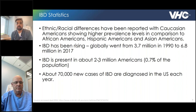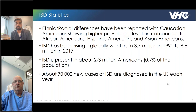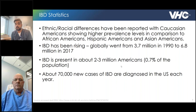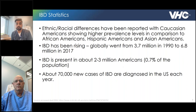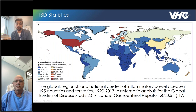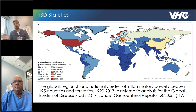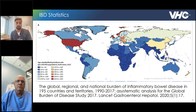IBD has been increasing globally over the last 20 to 30 years. From some statistics, IBD was present in about 3.7 million people in 1990, and as recently as 2017 was noted to be about 6.8 million people. In the United States, about 2 to 3 million Americans have the condition — about 0.7% of the population — and every year we diagnose 70,000 new cases. This graph shows the global prevalence from 1990 to 2017. Areas in red show higher prevalence, including the United States, the United Kingdom, and Scandinavia, while Africa and Asia — areas noted in blue — show lower prevalence.